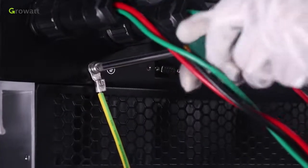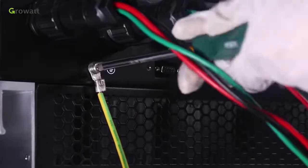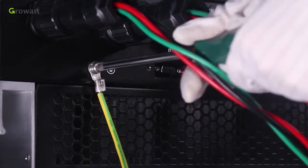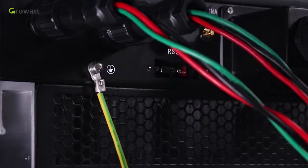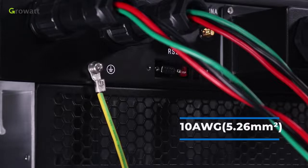Grounding connection. SPA series must be grounded by cable. The grounding point is showed as follow and the minimum grounding cable wire diameter is 10 AWG 5.26 square millimeters.